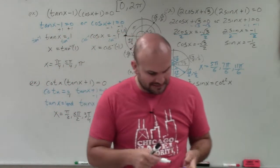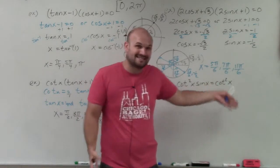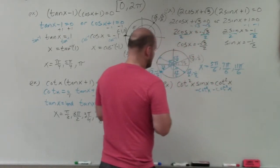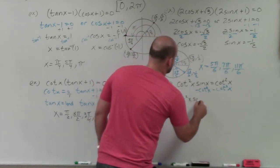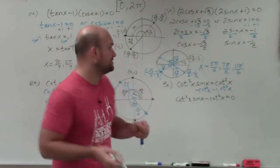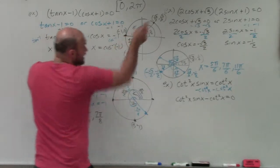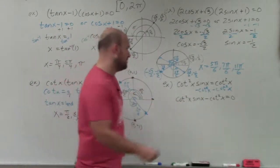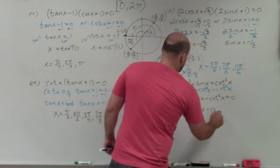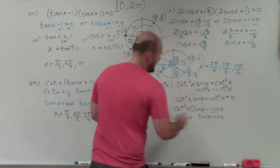In the last example, we can only apply the zero product property when we have a product set equal to zero. Here we have an expression not set equal to zero, so the first thing I need to do is set it equal to zero by subtracting cotangent²(x) from both sides. I now obtain: cot²(x)·sine(x) − cot²(x) = 0. I can't isolate sine and cotangent separately, so I factor — both terms share cot²(x), so I factor that out, leaving cot²(x)(sine(x) − 1) = 0. Now I can apply the zero product property.